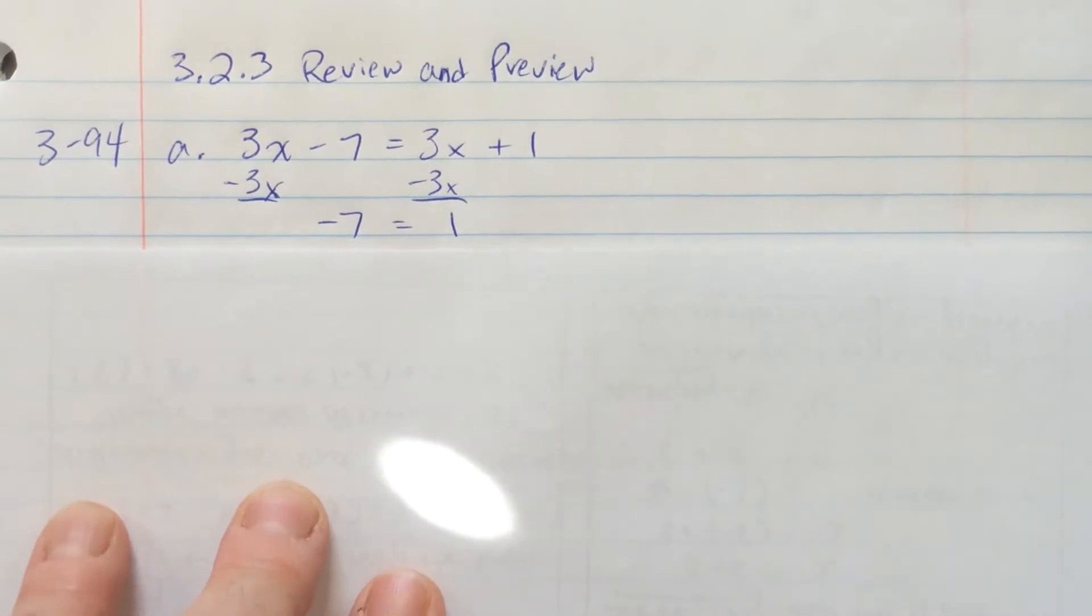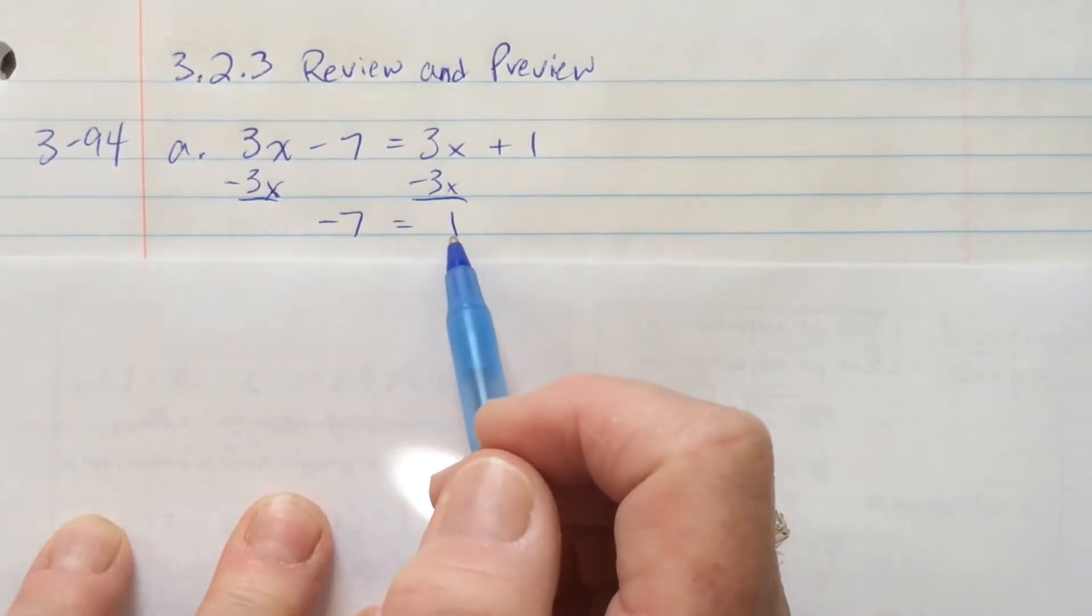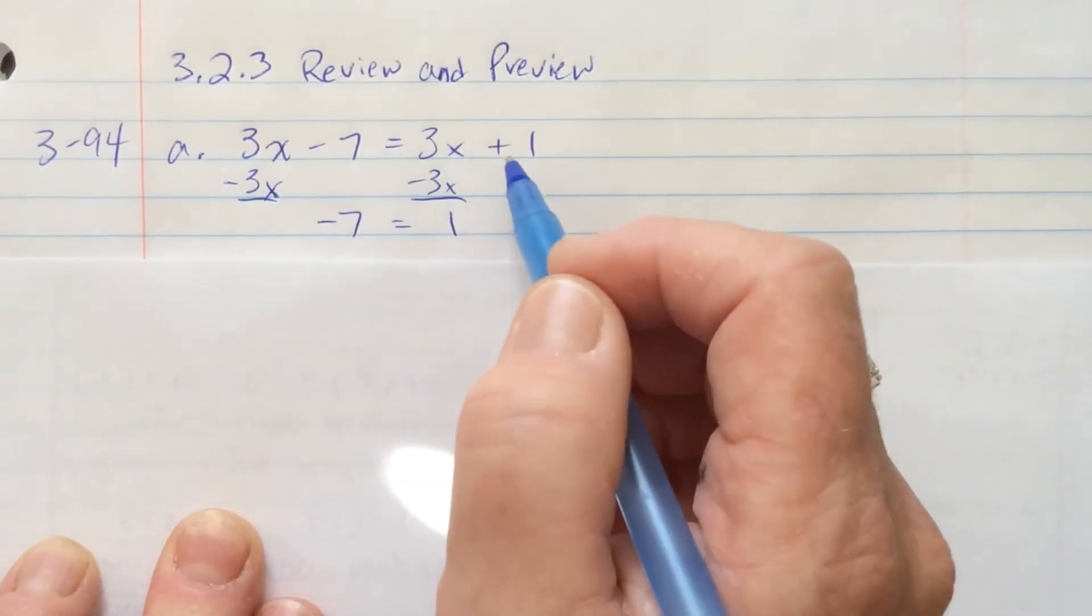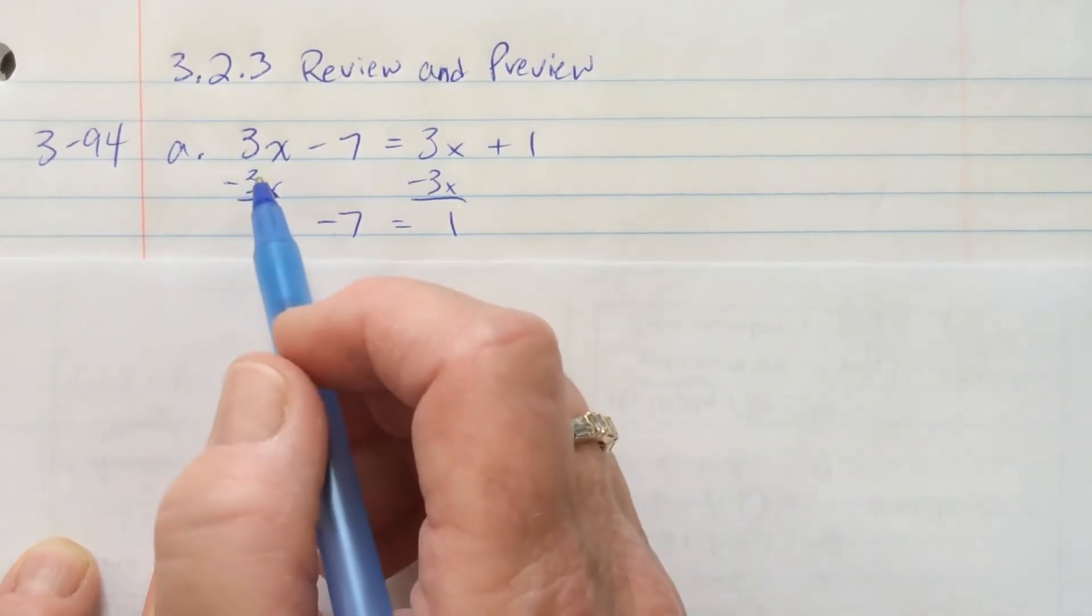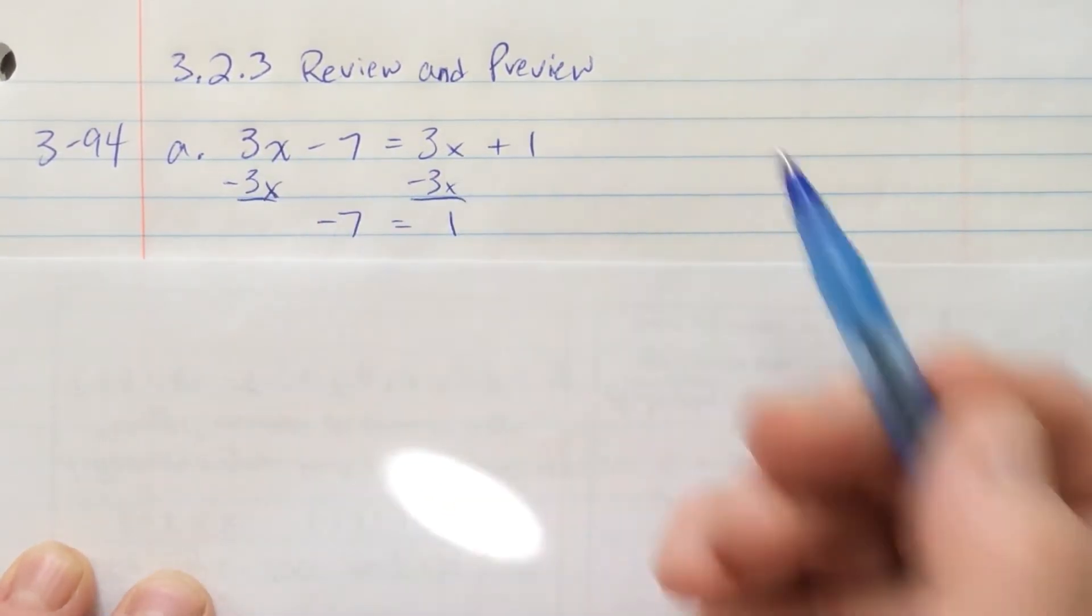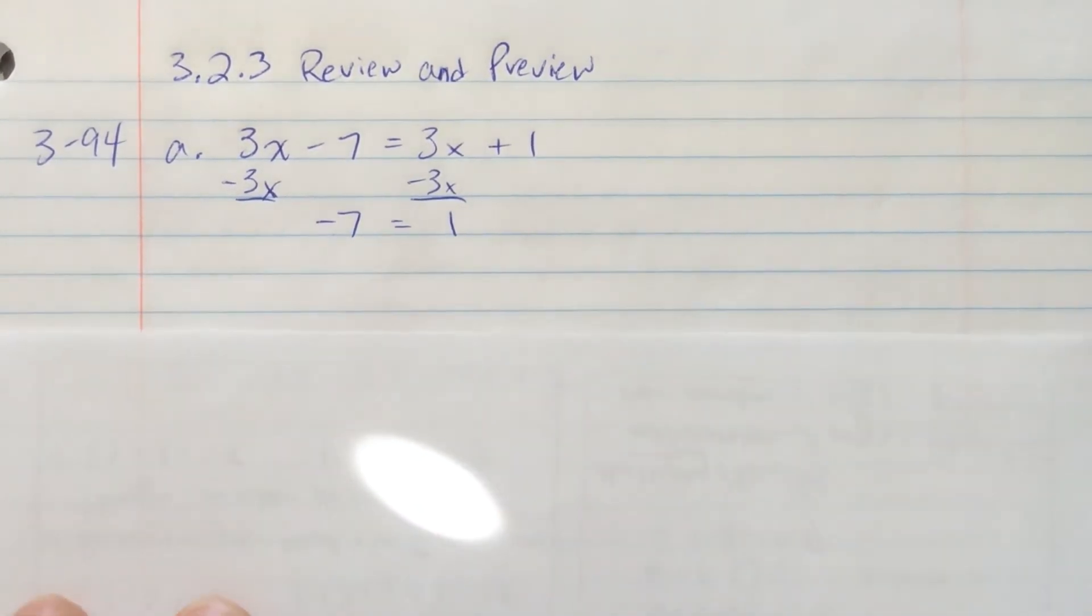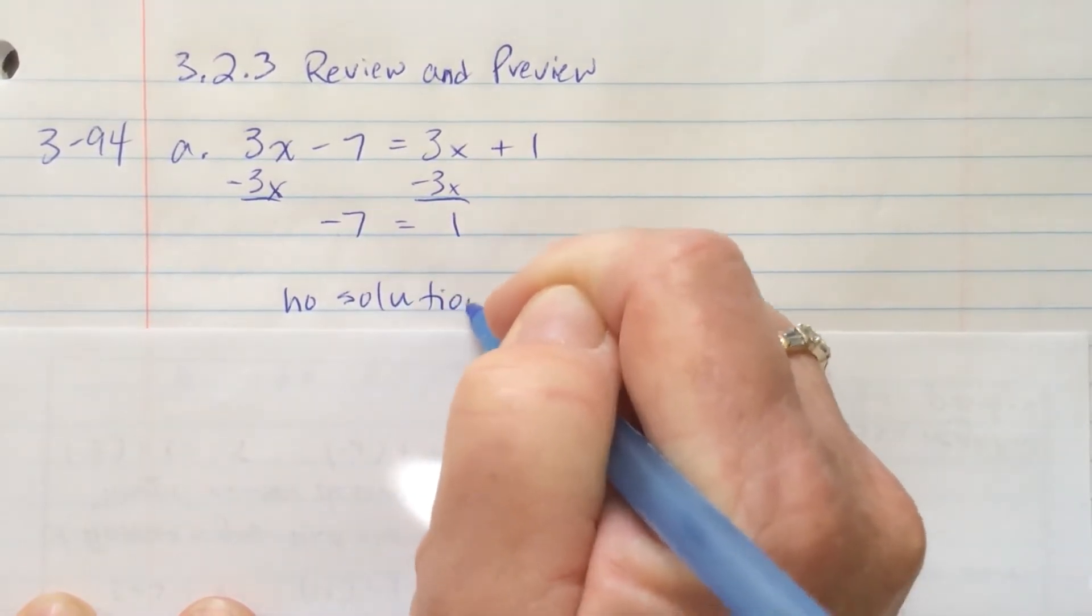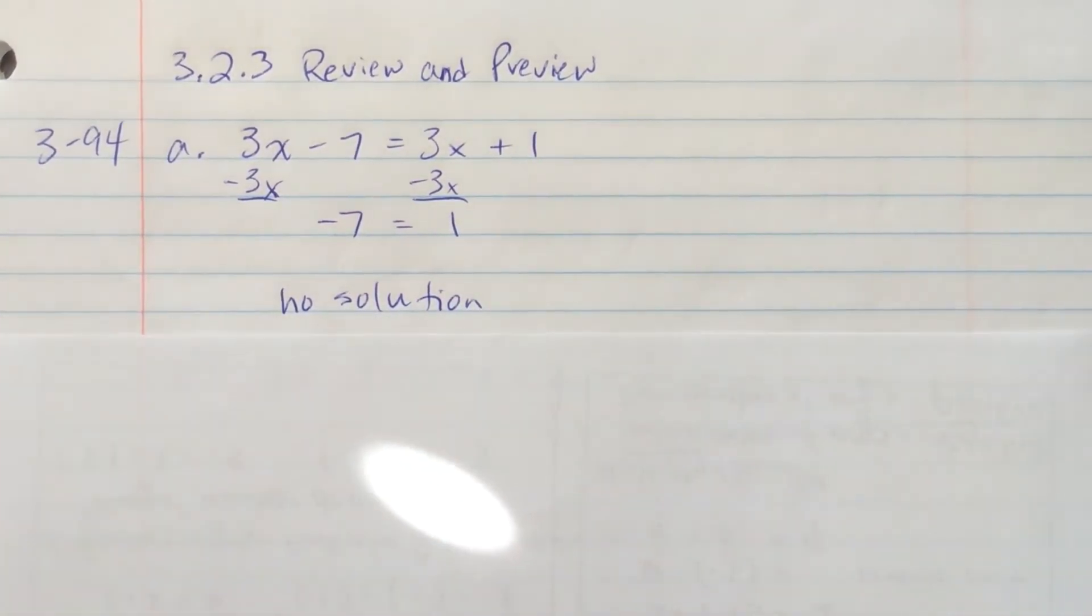Well, no matter what x is, there is no way that negative 7 will ever be equal to positive 1. If I make this a 0, I'd have negative 7 equals 1, which is not true. If I make this a 3, I would have 9 minus 7 equals 9 plus 1. Again, no matter what x is, it will never be true. So this is no solution. Sometimes that happens. Not very often.